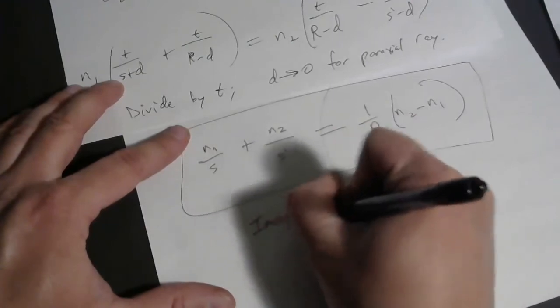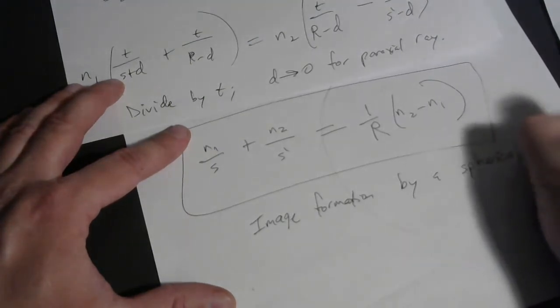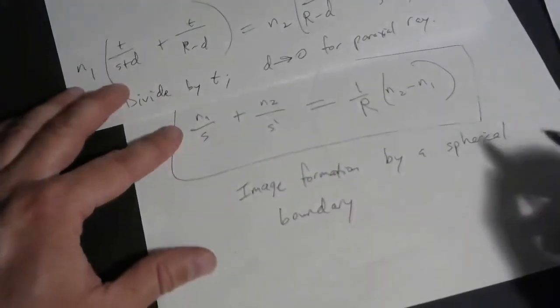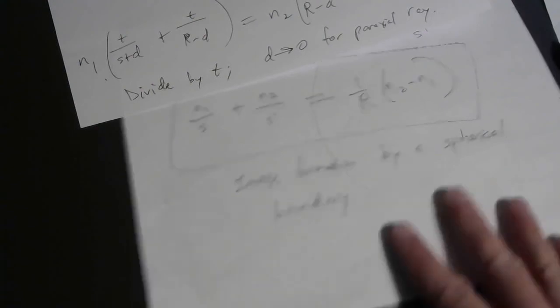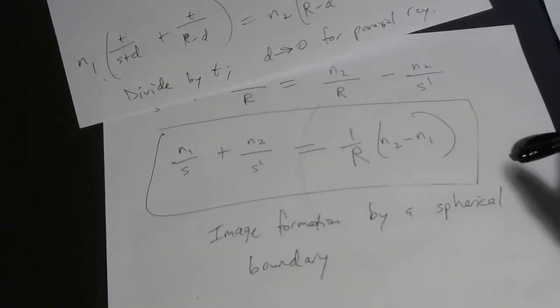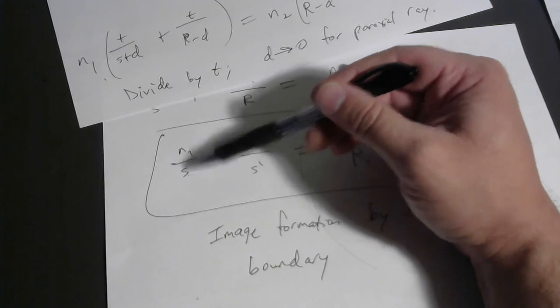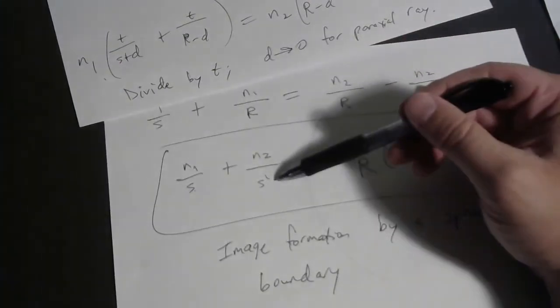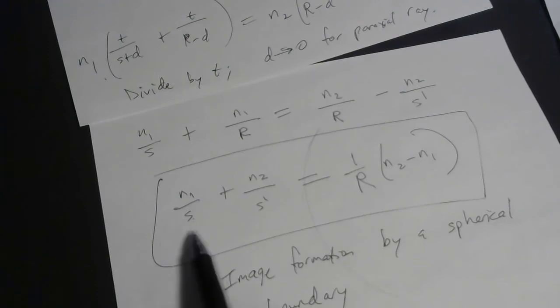Okay. We can call this image formation by a spherical boundary between two media with possibly different indices of refraction. Of course, both media need to be transparent. They have to allow light to pass through them. You'll find this formula in your book. This is, again, this is on page 979. It's not that hard to memorize. You know, I forget it a semester after we've gone over this material. But notice the object distance is on the left side of the boundary where the index of refraction is n1. The image distance, at least for our diagram, was on the other side of the boundary where the index of refraction is n2. So that helps you remember how to match these up.